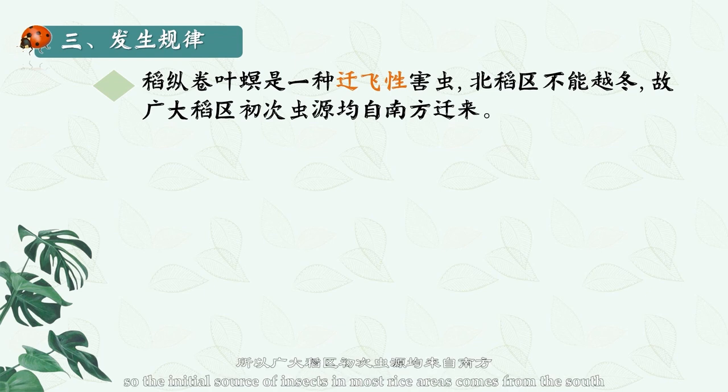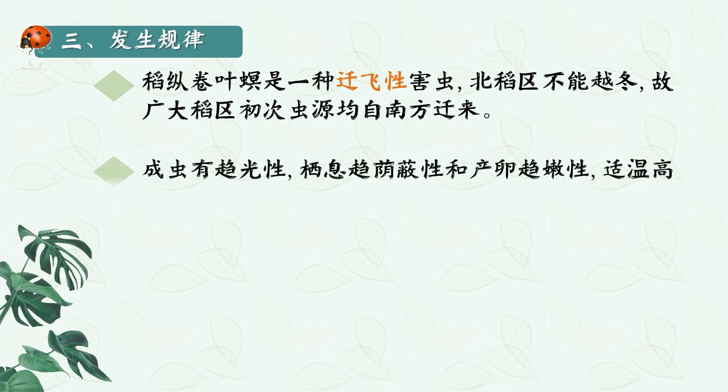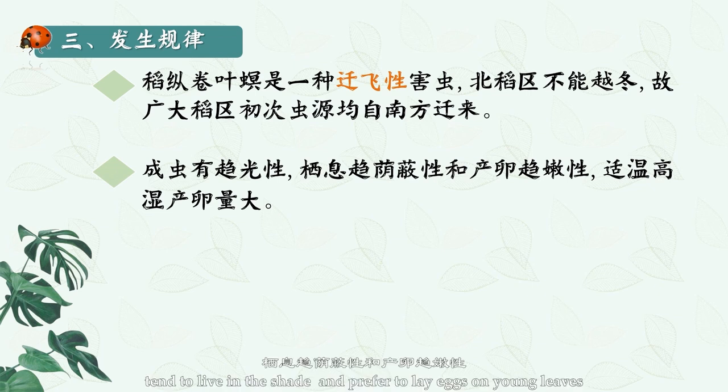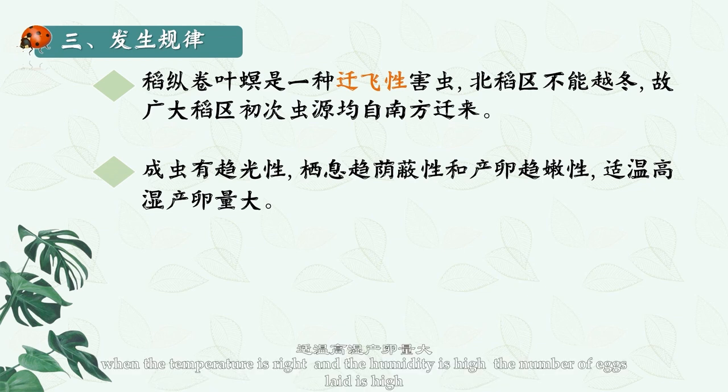Emergence pattern: rice leaf rollers are migratory pests and cannot overwinter in northern rice areas, so the initial source of insects in most rice areas comes from the south. Adults are phototropic, tend to live in the shade, and prefer to lay eggs on young leaves.